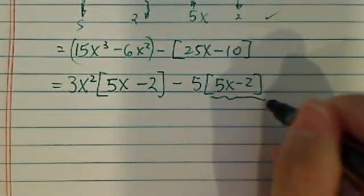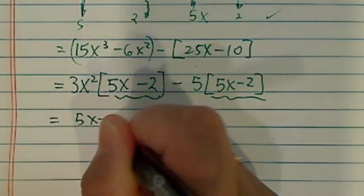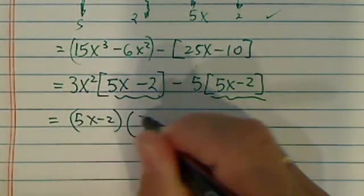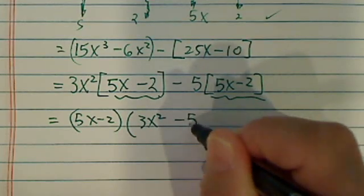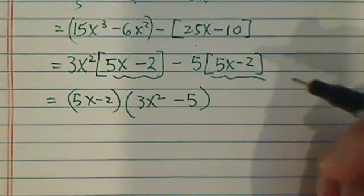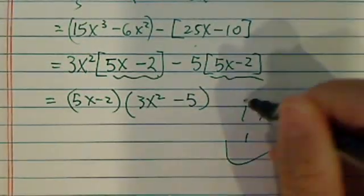5x minus 2 becomes my common one, and then 5x minus 2, I pull it out. The first time I have 3x² left, and the next time I have a 5 left, okay. That's how we factor it. Have a confident day.